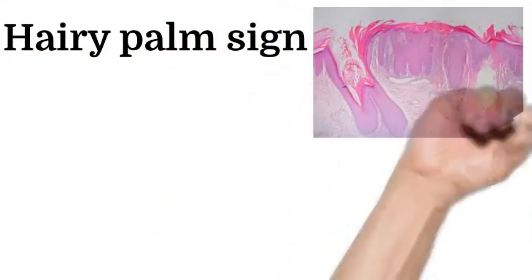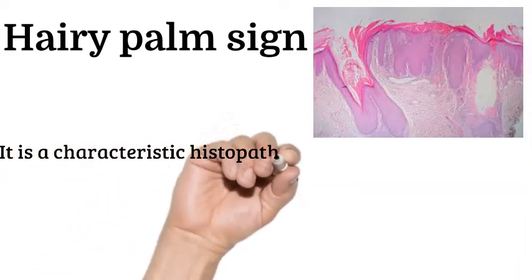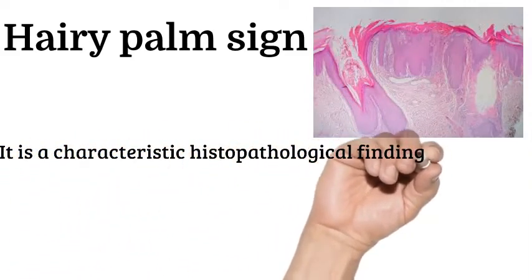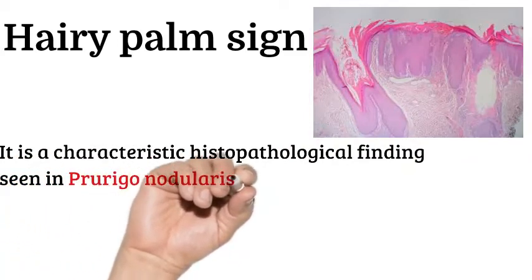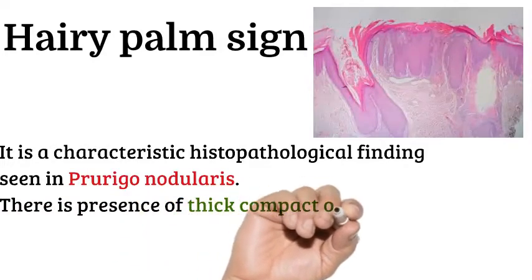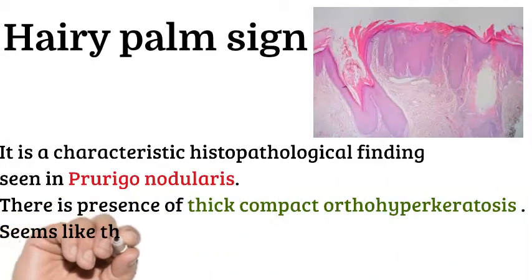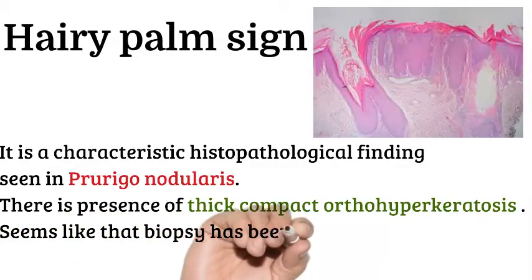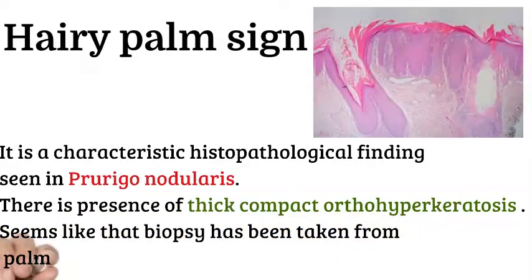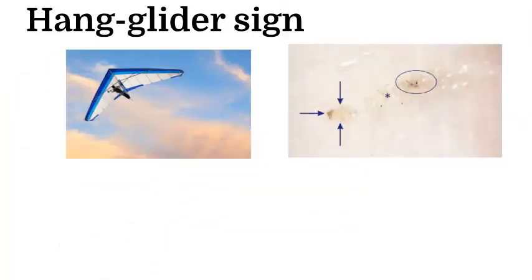Hairy palm sign: this sign is a histopathological finding seen in Darier's disease. There is presence of compact orthokeratosis — the biopsy appears as if it has been taken from the palm but contains pilosebaceous units.